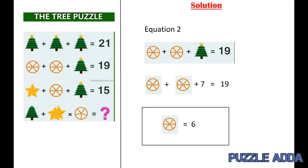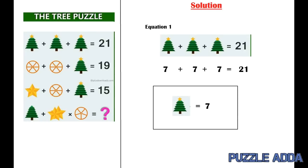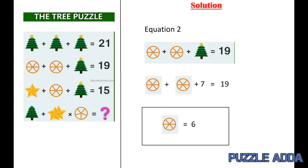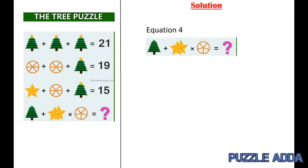Now we come to equation 3 which says a star plus a circle inside its 6 lines plus a tree with star which is equal to 15. So from equation 1 we have a tree with star is equal to 7. From equation 2 we got a circle inside its 6 lines is equal to 6. So putting the values we got a star is equal to 2.